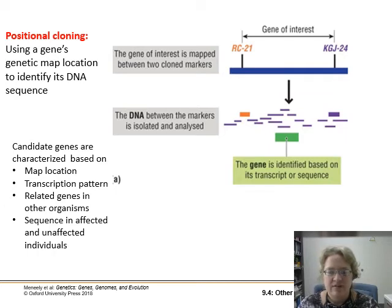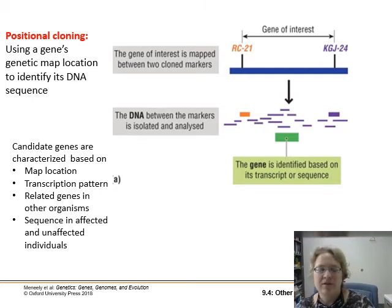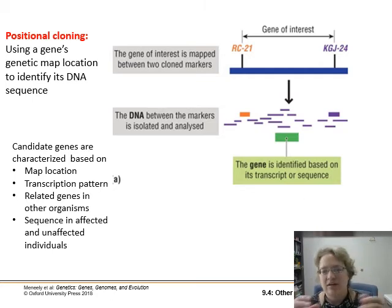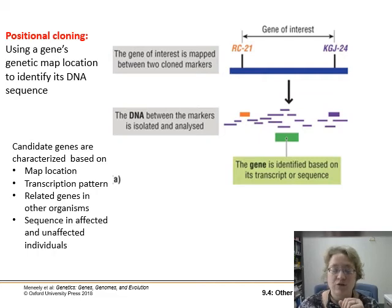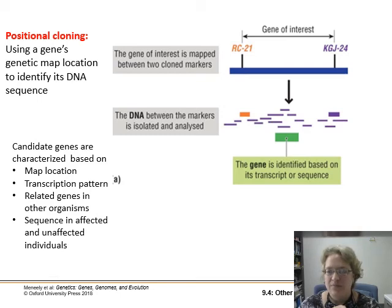Maybe you know about another organism where a gene shows up in between these two genes in a certain strain of bacteria. So you're going to search your strain and look for that in between the same spot. Positional cloning is a nice tool for when you know sort of where a gene is but haven't quite got its DNA sequence yet.